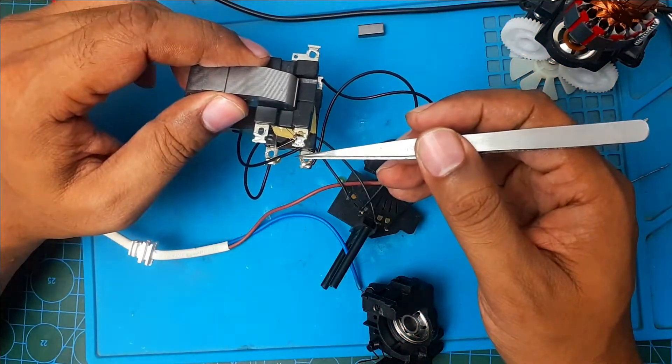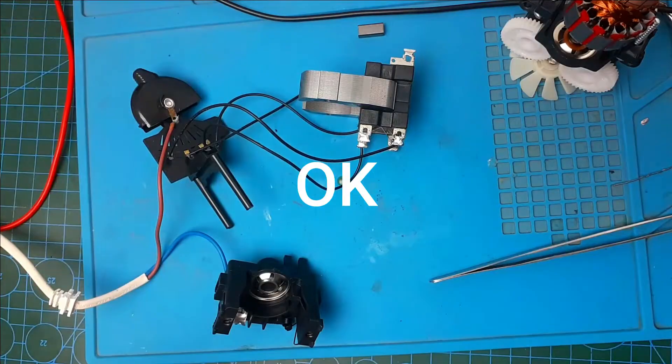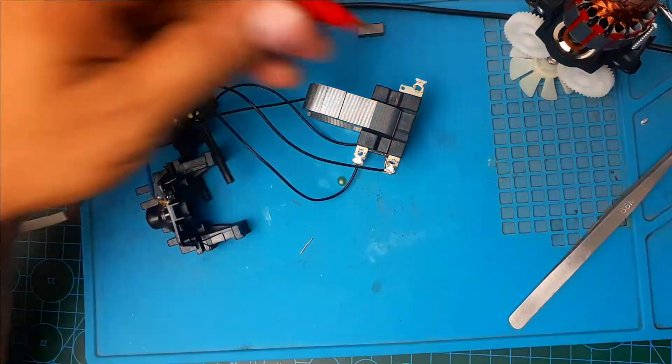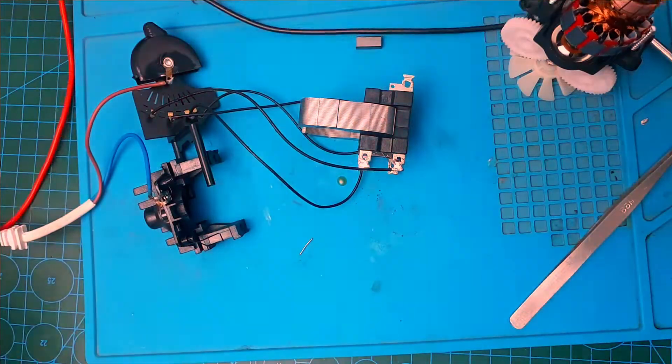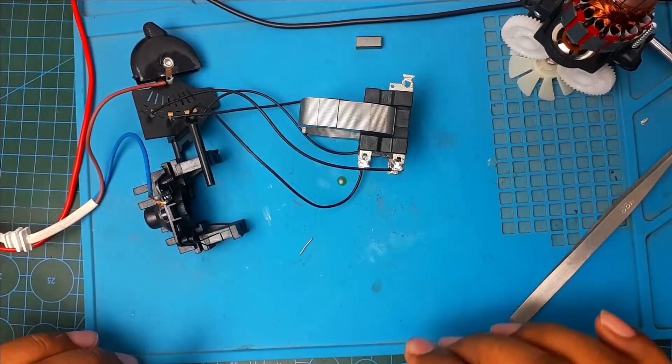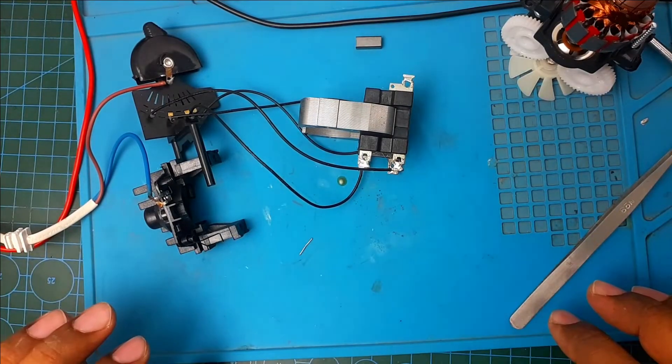This one is also disconnected. What is this? Okay, finally solder this connection too. Now see, does it - it's okay. Everyone is connected now. I think our device will work now. Let's assemble this and check again.